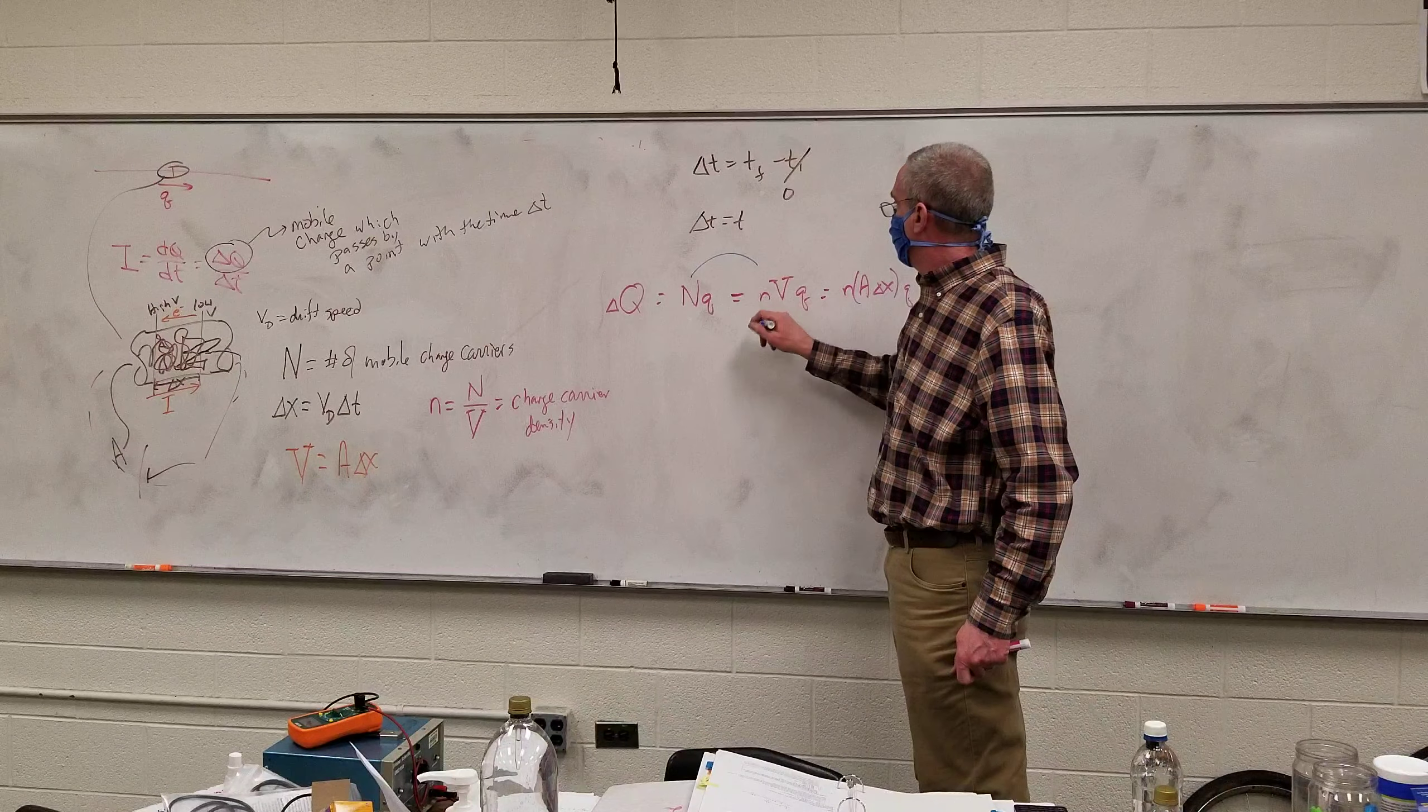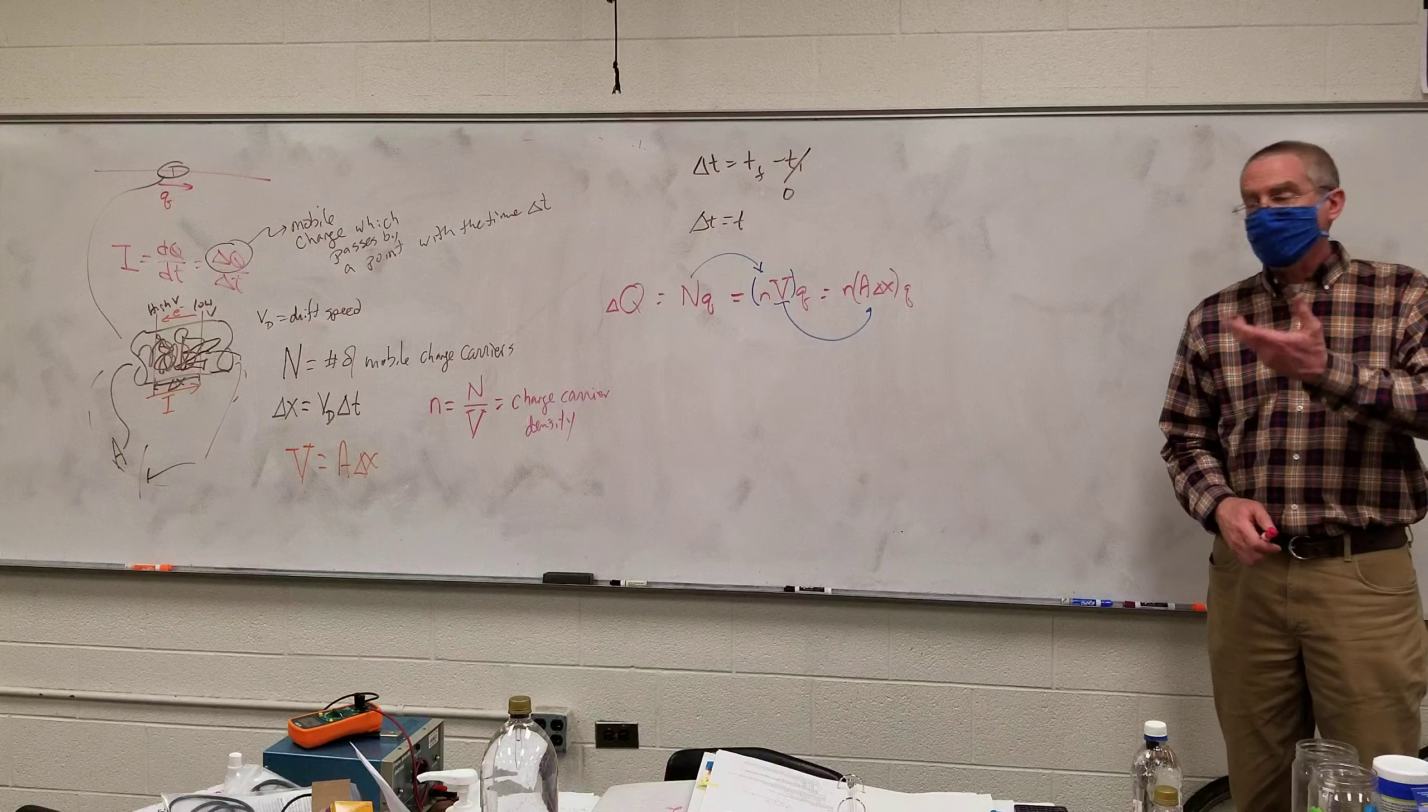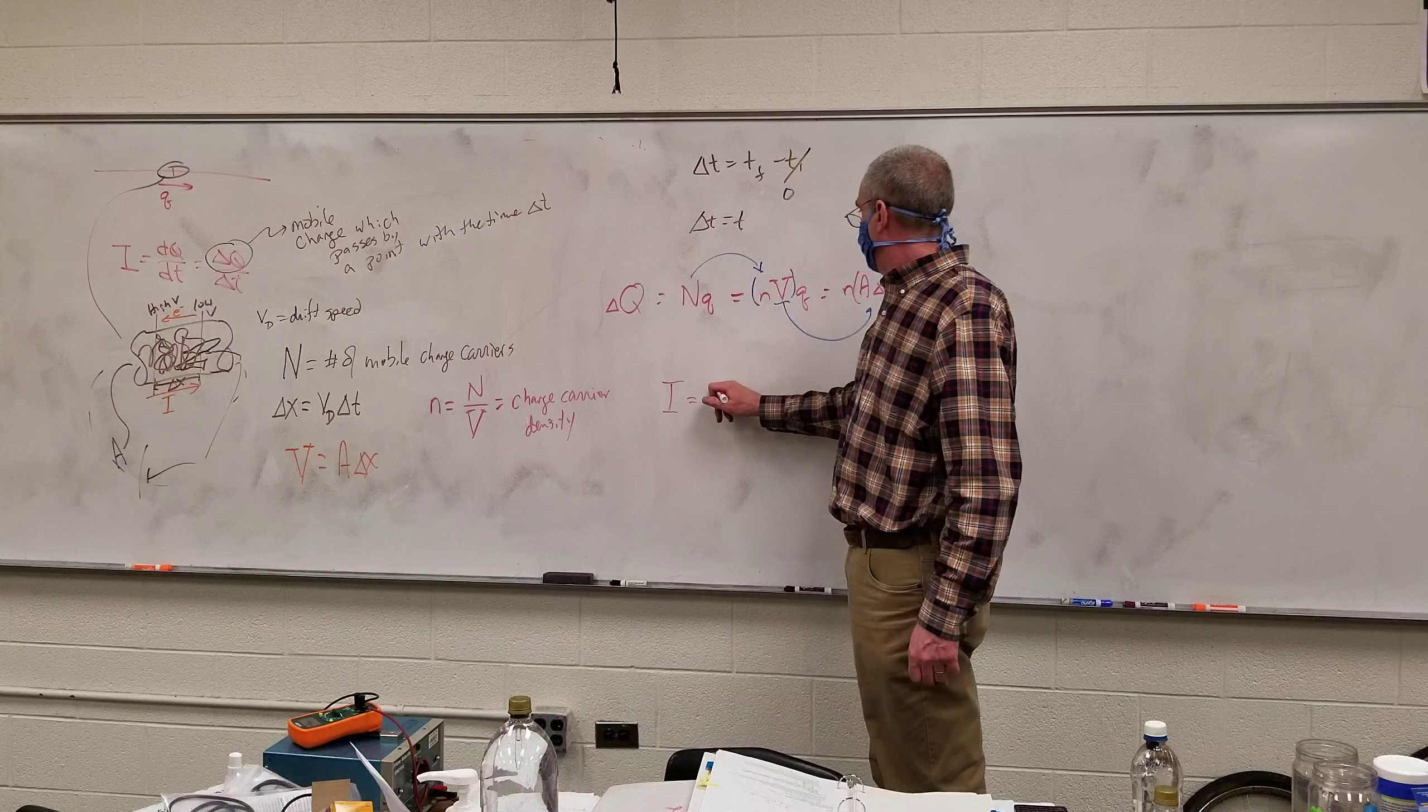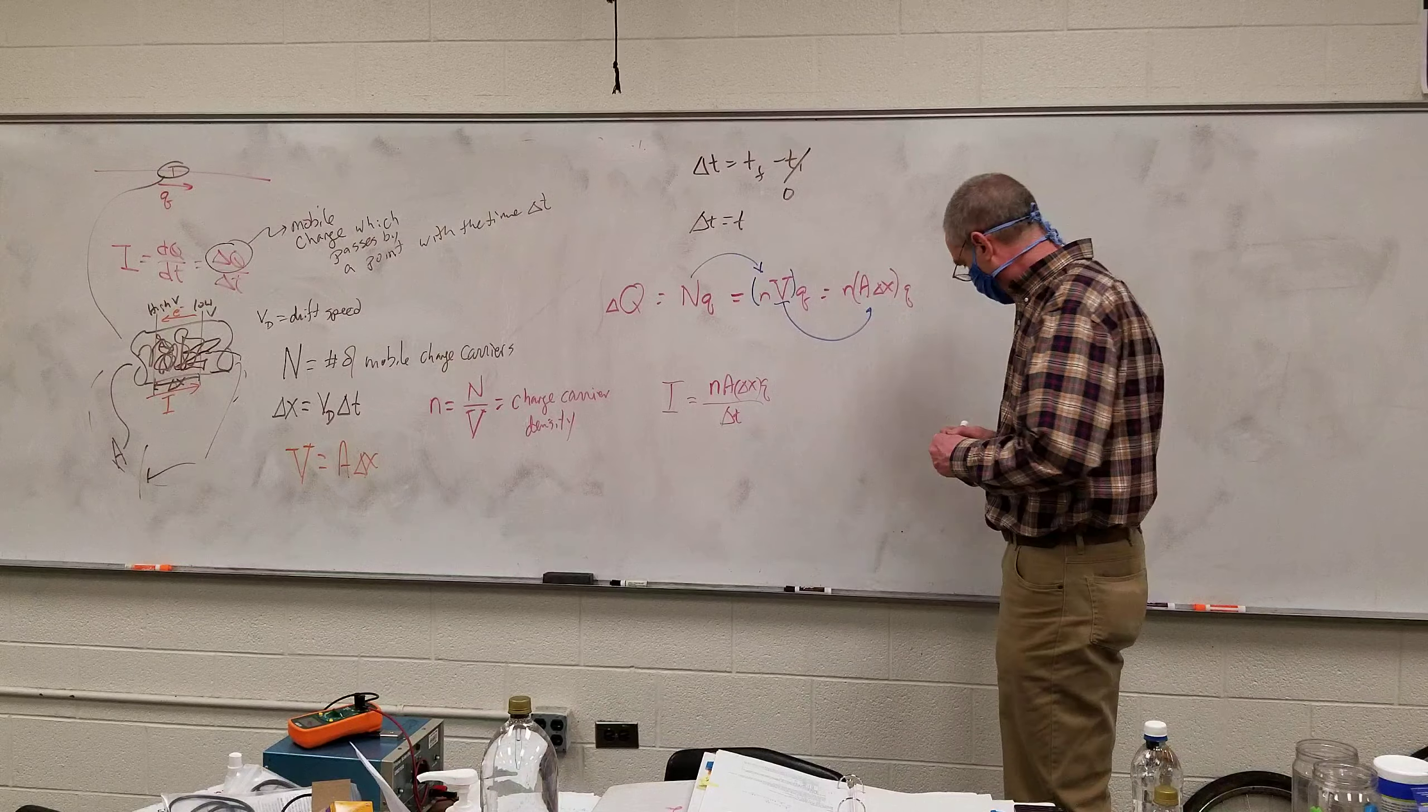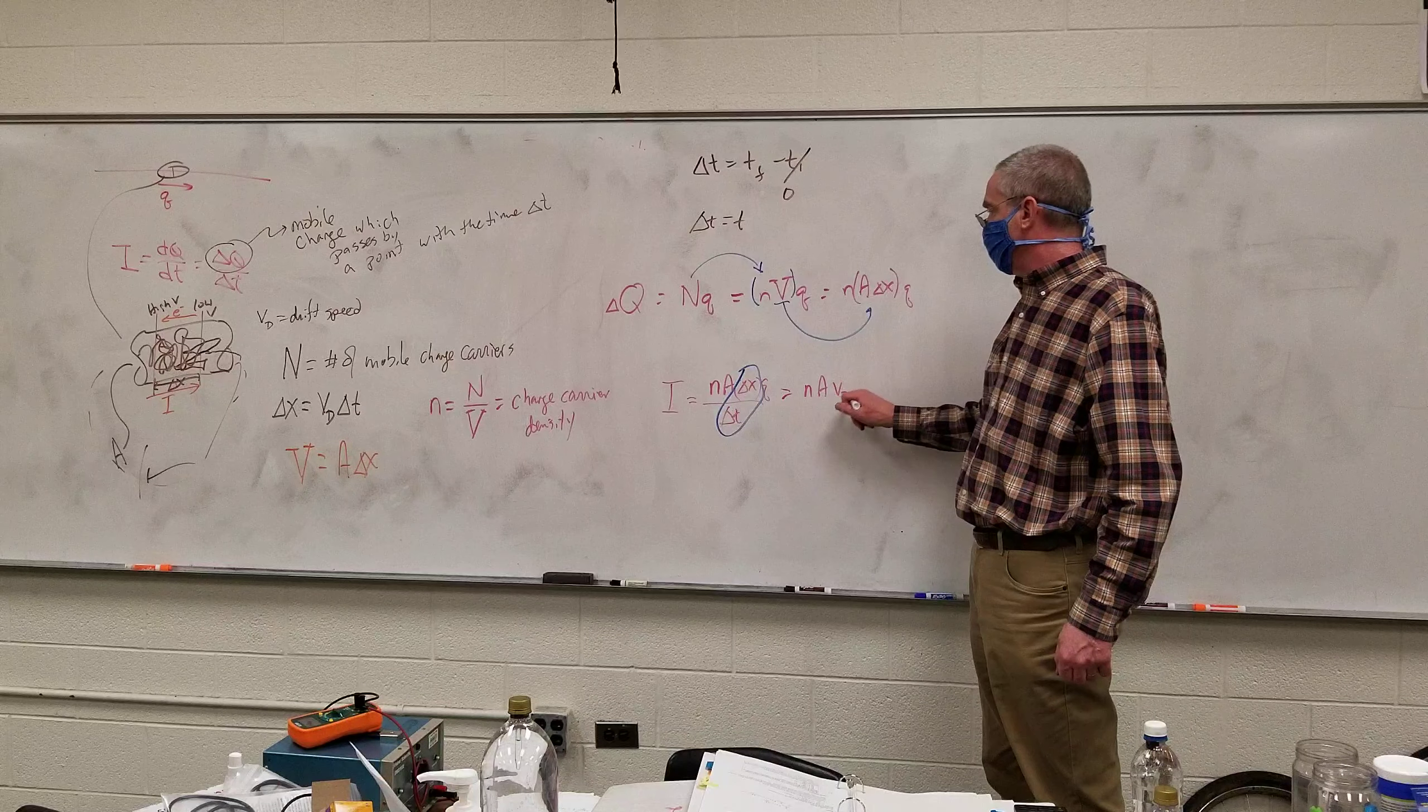So N became this, and then V became that. So now the current is just the number of charges passing through here divided by time. So my current is n A delta X Q divided by delta T. And lo and behold, delta X over delta T, that's just my drift speed. So my current is n A drift speed times Q.